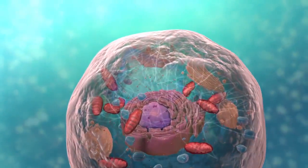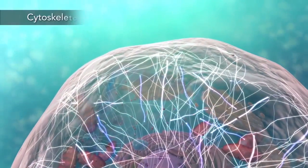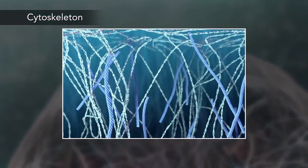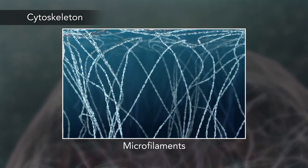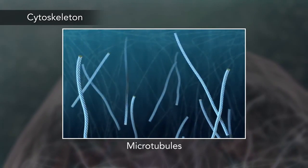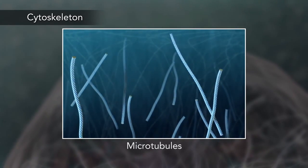Meanwhile, the cell maintains its shape through a cytoskeleton. The cytoskeleton includes the thread-like microfilaments, which are made of protein, and microtubules, which are thin, hollow tubes.